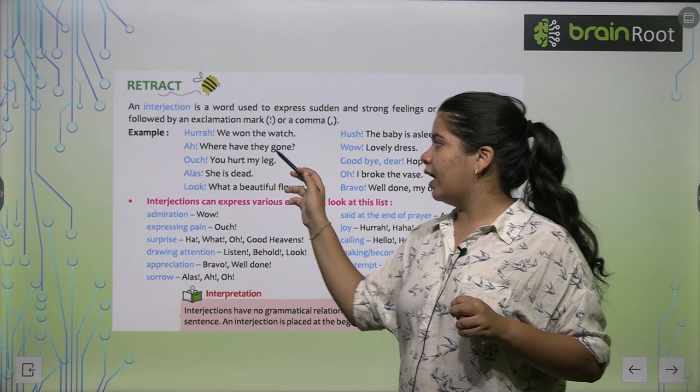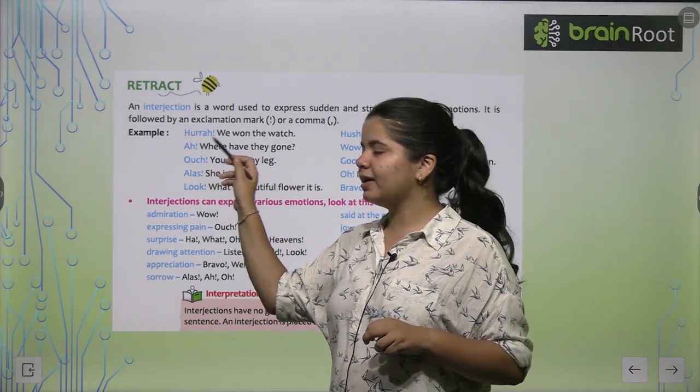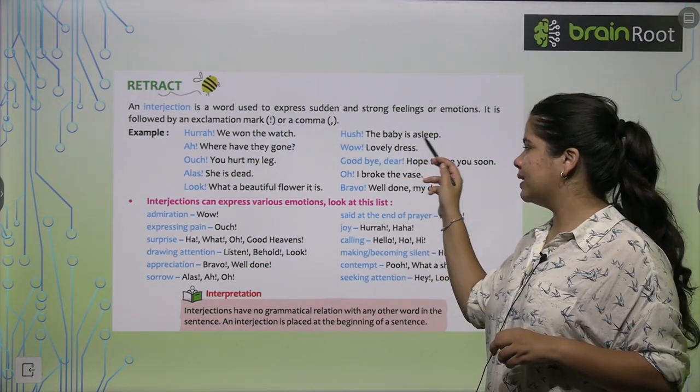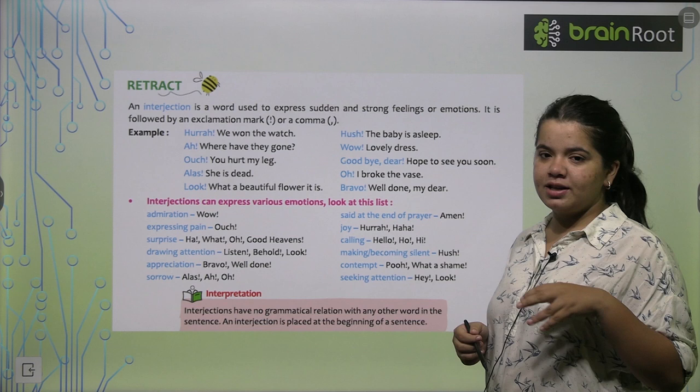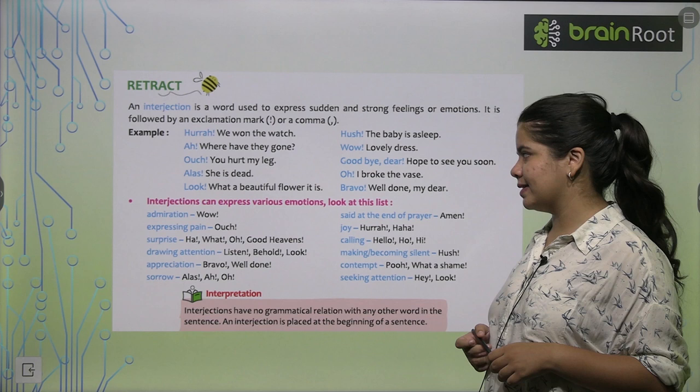For example: Hurrah, we won the match! You can see that hurrah is an interjection because it expresses a feeling of happiness, feeling of excitement. After this we put an exclamation mark. Next, Ah, where have they gone? You can see that this interjection is followed by an exclamation mark. Hush, the baby is asleep. So hush is also an emotion, and we put an exclamation mark after it.